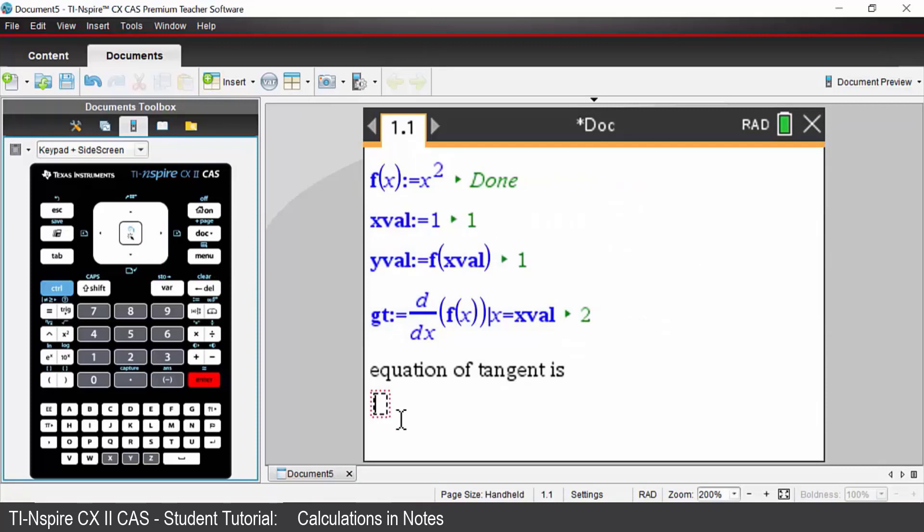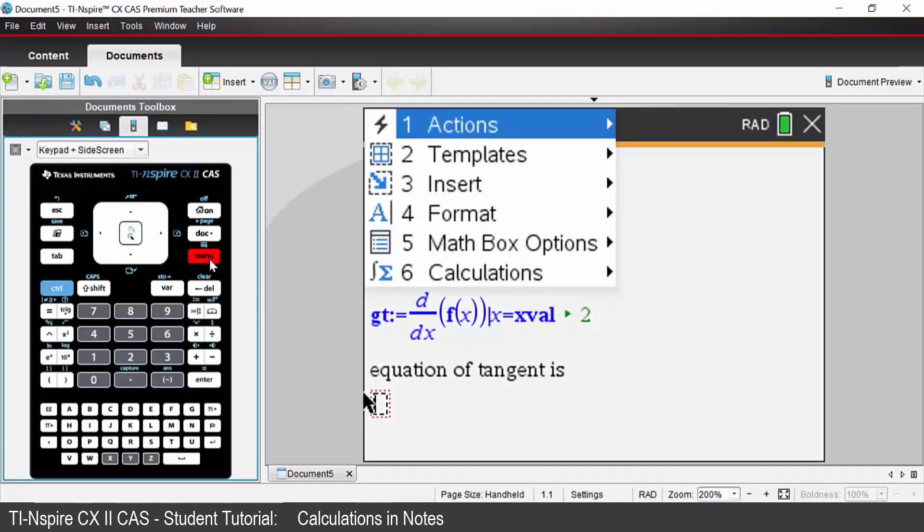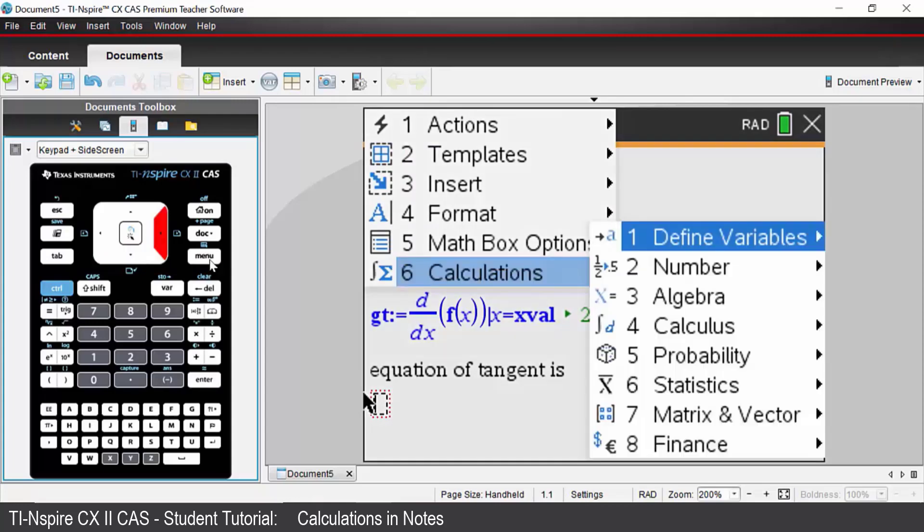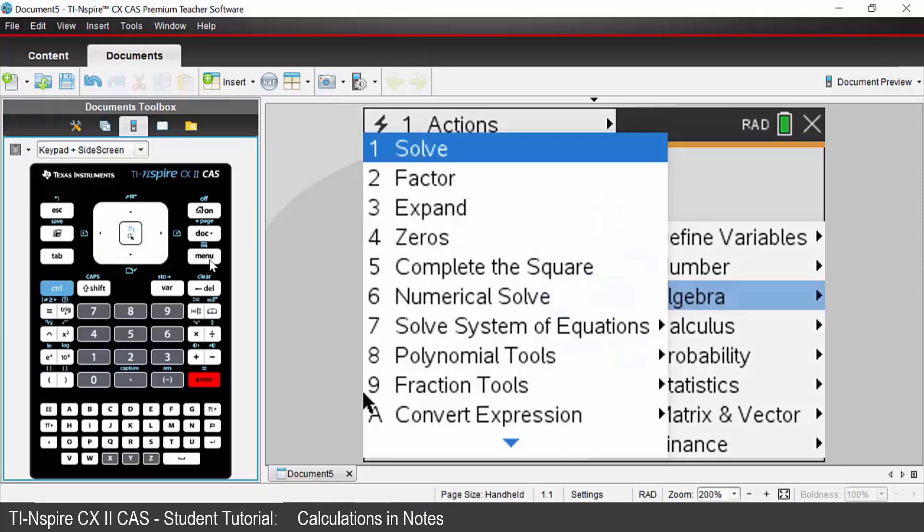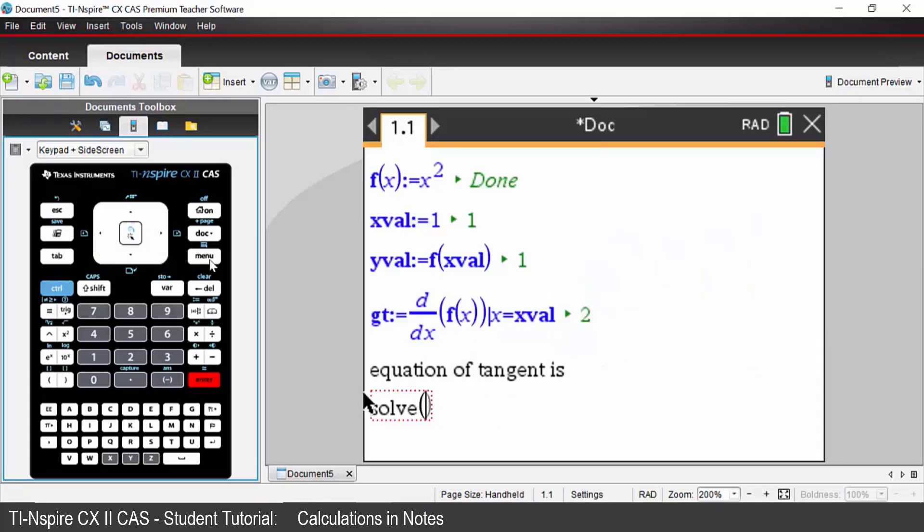We're now going to solve an equation and to access the solve feature let's go to menu, come down to calculations, option 6. And this is an algebra skill so let's look at option 3 algebra. And we're going to choose option 1 which is solve. You could have typed in the word solve also.